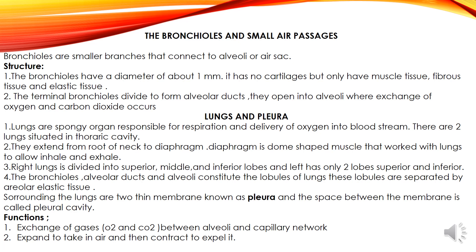Lungs and pleura: the lungs are spongy organs responsible for respiration and delivery of oxygen into the bloodstream. There are two lungs situated in the thoracic cavity. They extend from the root of the neck to the diaphragm, and the diaphragm is a dome-shaped muscle that works with the lungs to allow inhalation and exhalation. The right lung is divided into superior, middle and inferior lobes, and the left lung has two lobes — superior and inferior. The bronchioles, alveolar ducts and alveoli constitute the lobules of the lung, which are separated by alveolar elastic tissue. The lungs are surrounded by a thin membrane called the pleura, and the space between the membranes is called the pleural cavity. The function is exchange of gases between the alveoli and capillary network.